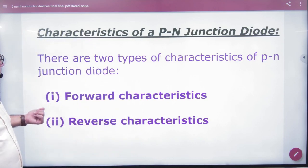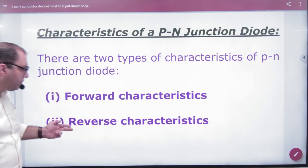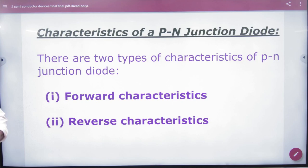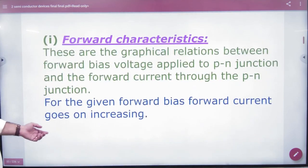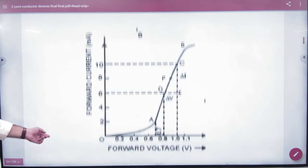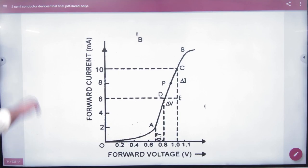So we discuss two types of characteristics. One in forward biasing and one in reverse biasing. In forward biasing, we call forward biasing. And in reverse biasing, we call the reverse characteristics. So in forward characteristics, we are going to do one thing.